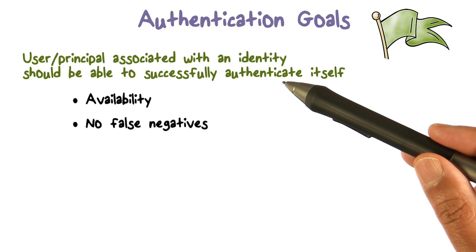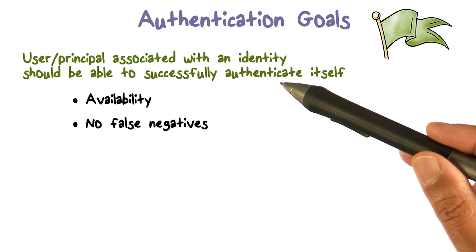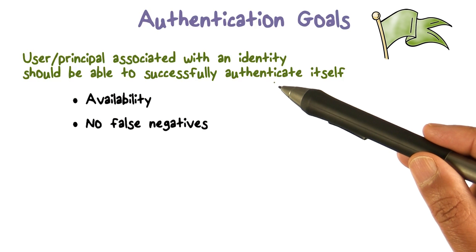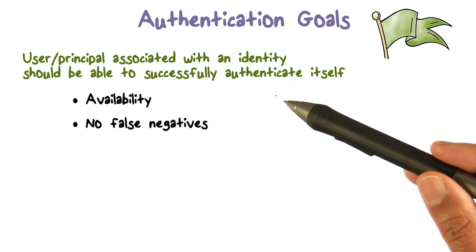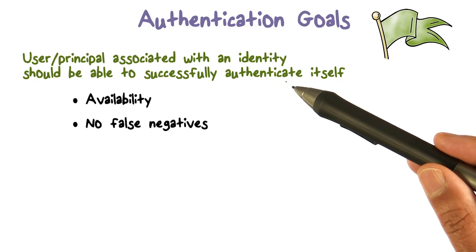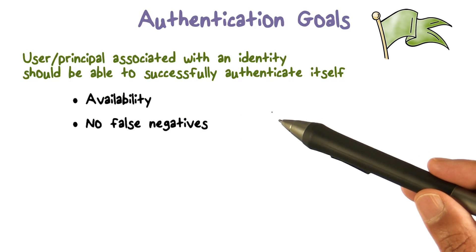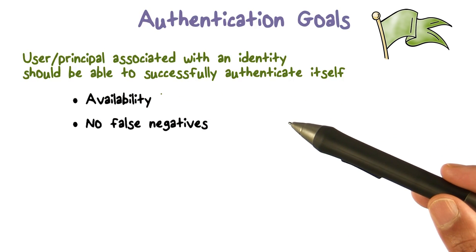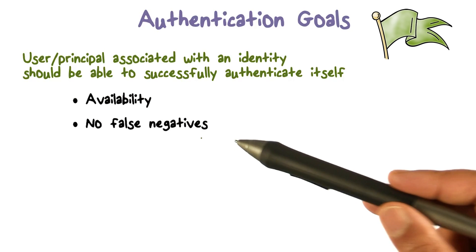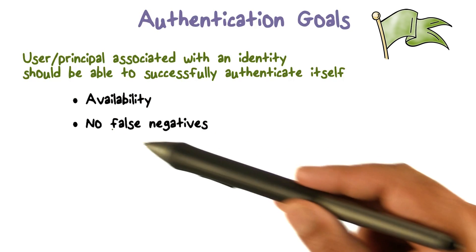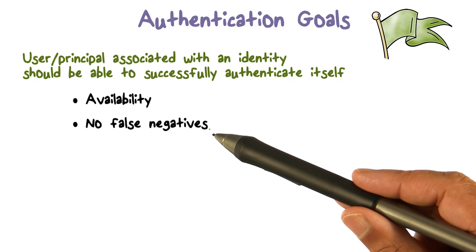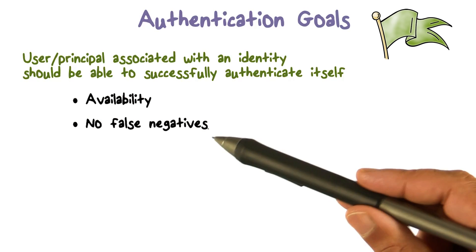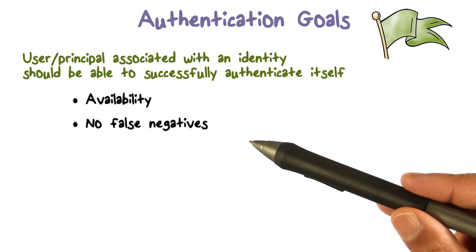The system is available to the user who is able to provide the right evidence to support the claim — for example, that the user is Alice. So the system should be available to the legitimate user who provides the correct evidence. In other words, we don't want to have any false negatives. Let's spend a little time on what we mean by this phrase: false negative.